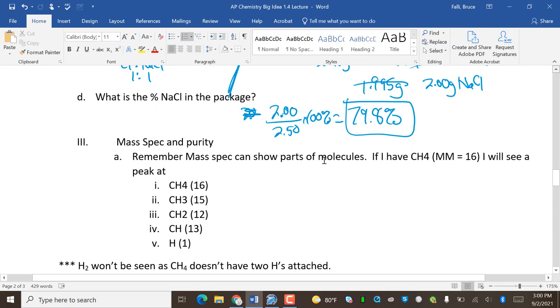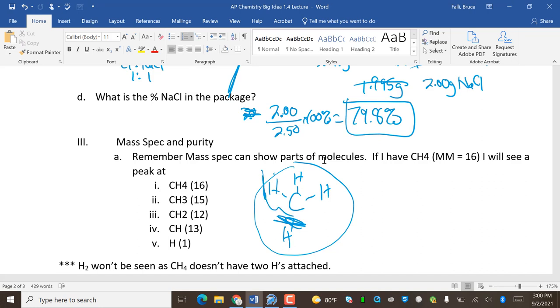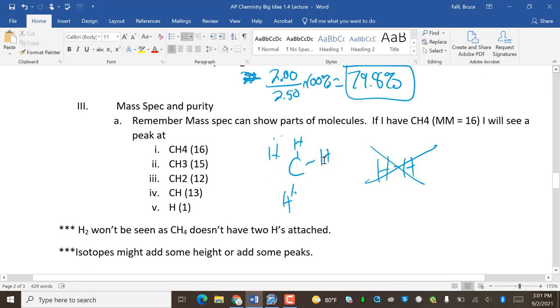Mass spec and purity. Remember, mass spec can show parts of molecules. If I have CH4, and I'm going to draw CH4 here. If I have CH4, I will see a peak at CH4. Hey, that's all of it, it's all together. And I will see CH3. If this breaks off, I'm left with... And if this one breaks off, and this one breaks off, I have CH2. And then if this one breaks off again, I have CH. And then you can see I have a bunch of Hs. You would never see H bonded to H. Why? When I look at this molecule, is there a time when H is bonded to H? No. Every H is bonded to C. So H to H will not show up. So that means there will be no 2.